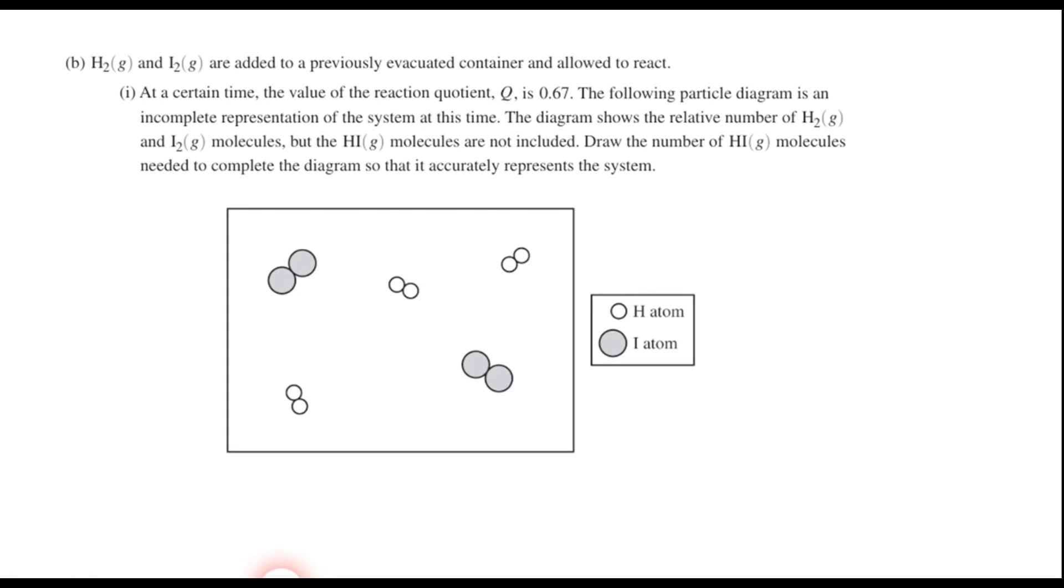Now, part B, we have H2 and I2 are added to a previously evacuated container and allowed to react. And it tells us that at a certain time, the value of the reaction quotient, Q, is 0.67. We have a particle diagram here that is an incomplete representation of the system at that time. The diagram shows the relative number of hydrogen gas and iodine gas molecules, but the HI gas molecules are not included. Draw the number of HI gas molecules needed to complete the diagram so that it accurately represents the system. So we have a calculation here that we need to do.